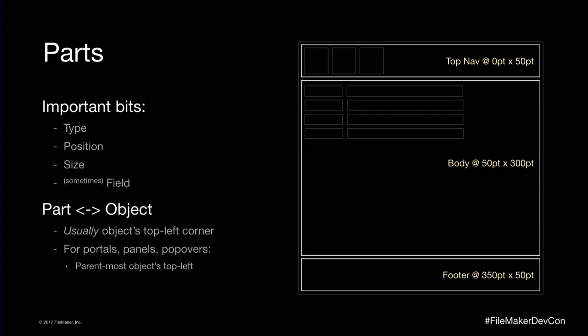Parts are at the bottom of the layout stack. They have a couple of important properties, the first being the part type. The part type tells us where it goes and how it behaves when you switch into list view. The two that are really special and behave like none of the other parts are the navigation parts introduced in FileMaker 14. They float outside of the document space — when you scroll or zoom the document, they don't move or zoom. All the rest of the parts live inside the same coordinate space, the same scrolling space.